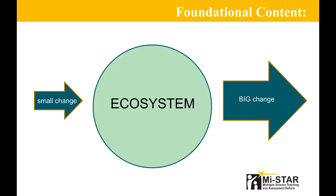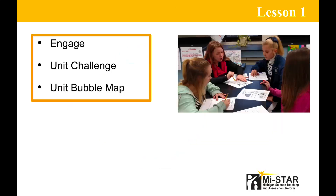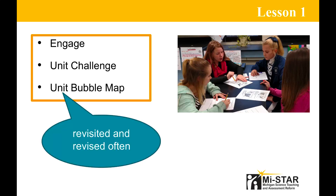We're now going to focus our attention on brief summaries of the lessons that compose Unit 6.6. In common with all MyStar units, the first lesson serves to engage students in our topic: interactions within ecosystems. After uncovering students' thoughts and ideas about ecosystems, students are introduced to the unit challenge question and unit challenge. Through the creation of a class unit bubble map, students have the opportunity to think about what they need to learn in order to answer and address the question and challenge.